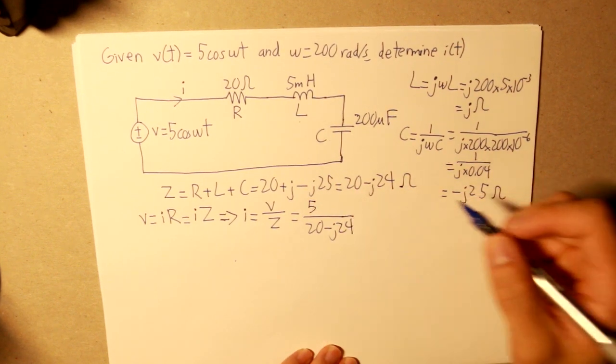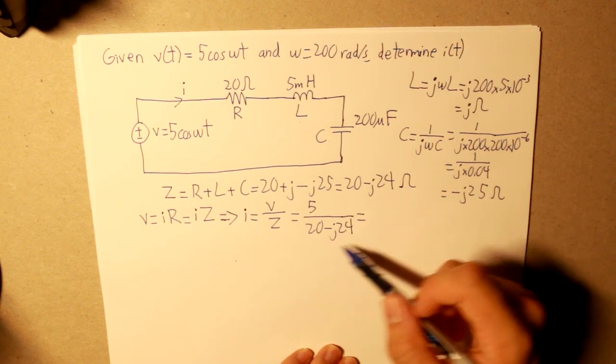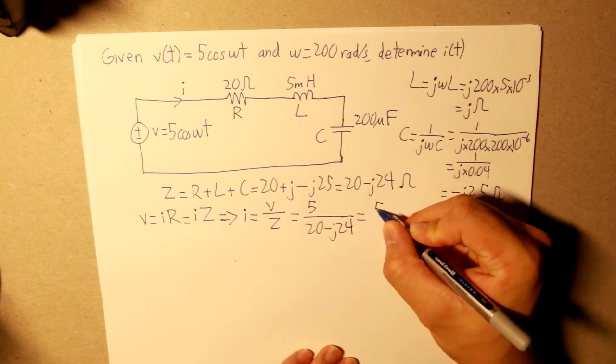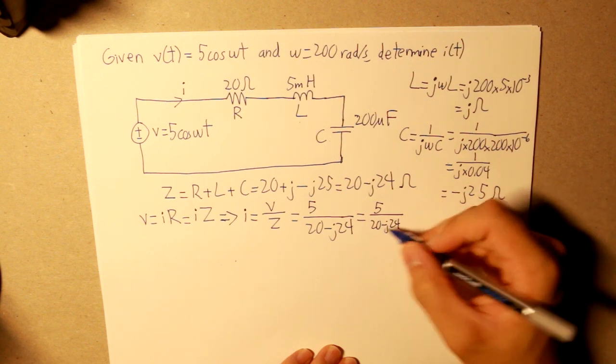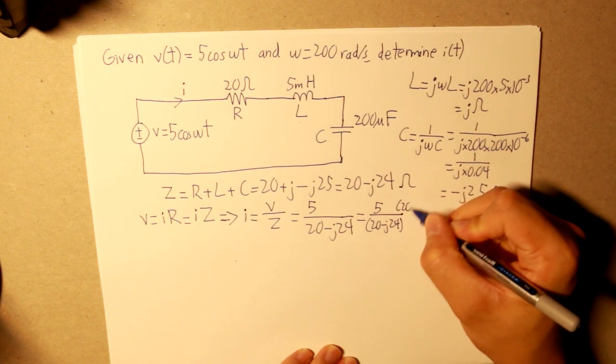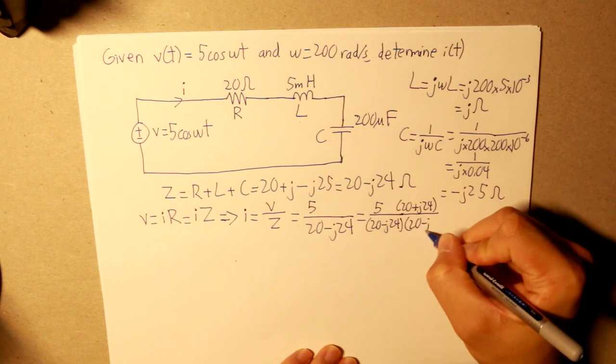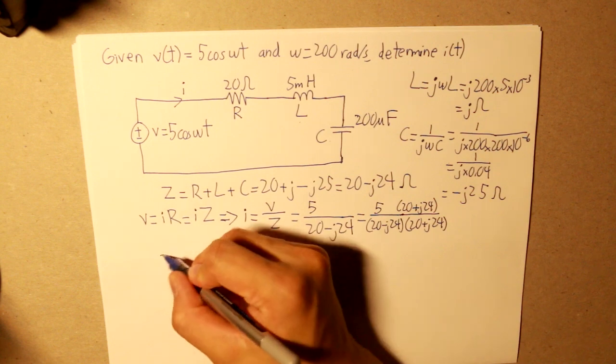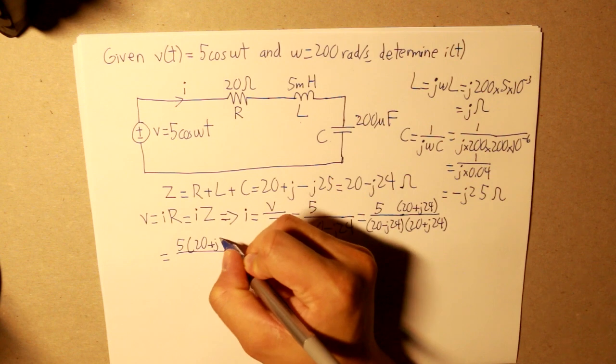Now, using the division of simplification, what we're going to do is try to simplify the denominator out, since this looks more complicated than your numerator. So we have 5 divided by 20 minus j24. And what we're going to do is we're going to multiply 20 plus j24 in the numerator and in the denominator.